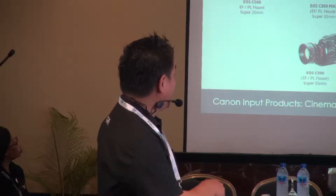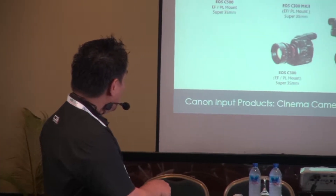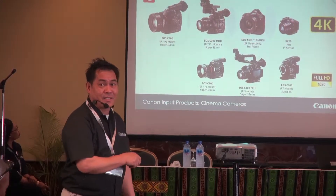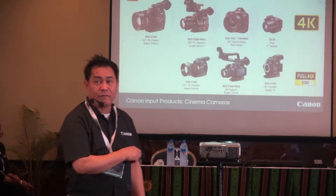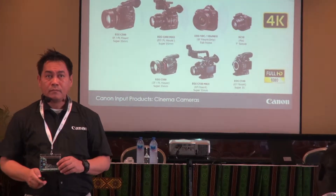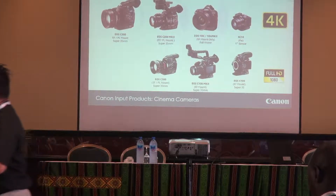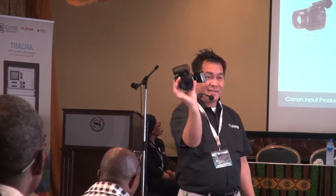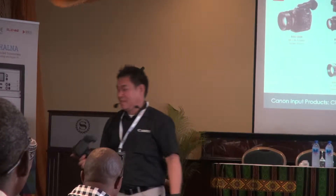So what are the products that can achieve high dynamic range? We have the C300, we have the C500 — all those 4K cameras. From C500, C300, 1DC, and XC10. The XC10 is the smallest 4K camera we have from Canon — it's only this big. You can put this in a drone and use it for photo shooting as well.